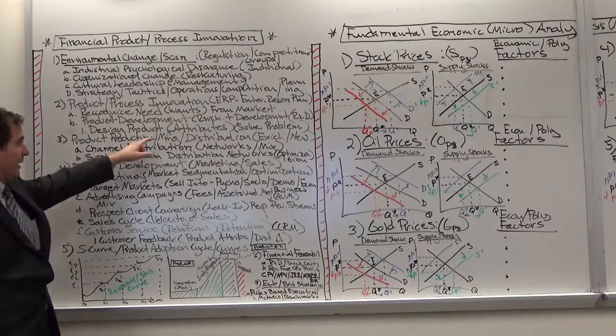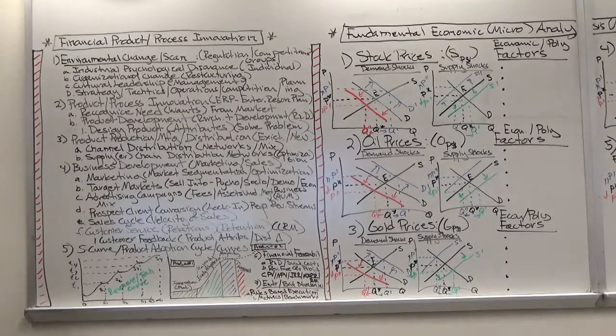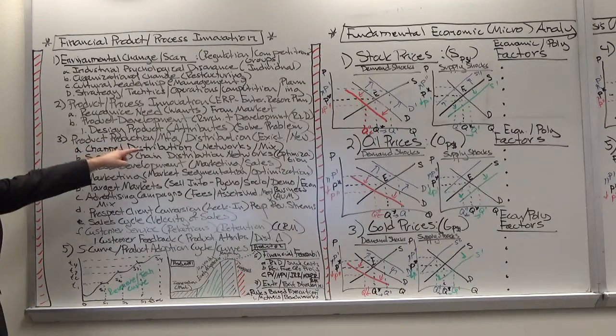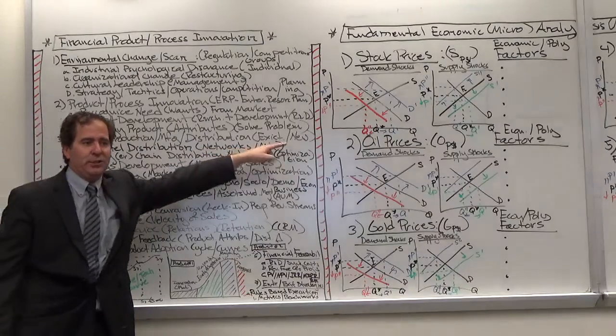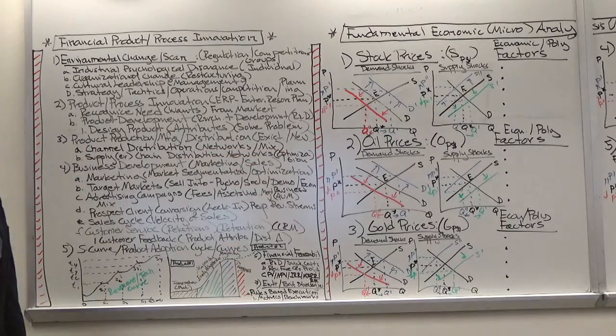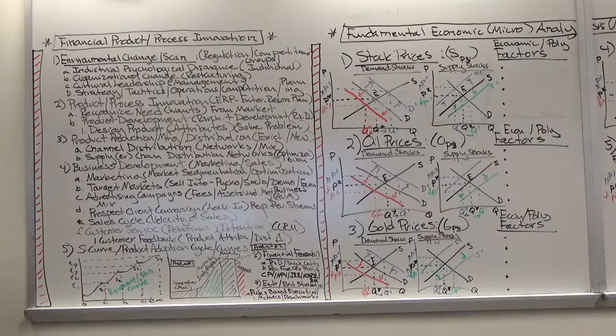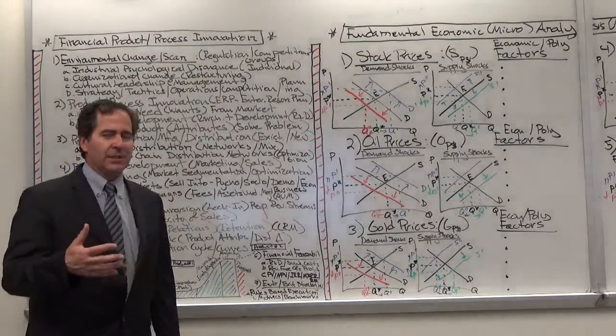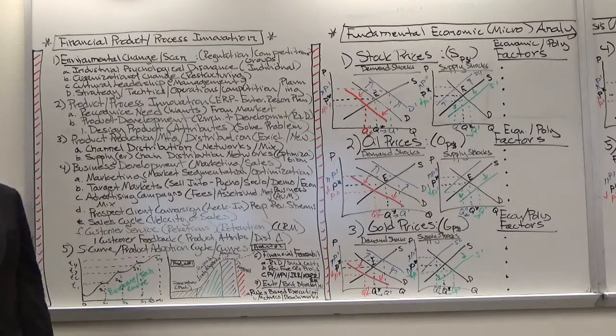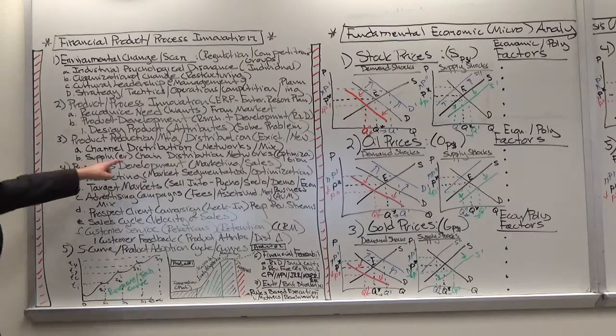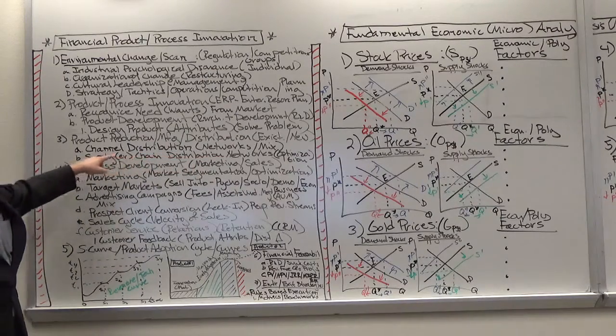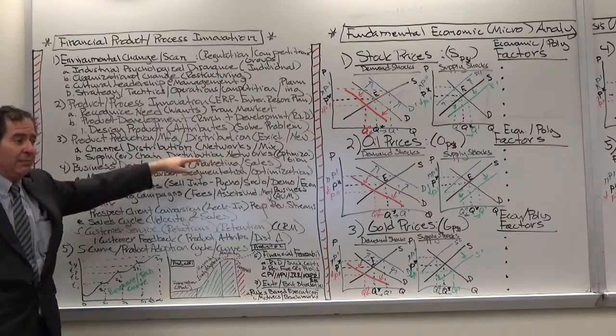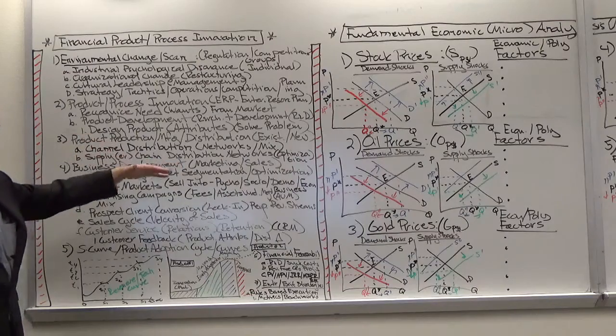So you've got to design the product with the attributes that's going to solve the client's needs. You've got to have the product production. You've got to be able to manufacture it and you've got to be able to distribute it through existing and new distribution channels. What are those distribution channels? What is the optimal mix of the delivery system to push the product out to the customers that need it and then be able to deliver it and close? You need channel distribution and networking and the mix among those channel distributions. They need to be optimized, they need to be tested, and they need to be looked at that's going to maximize the revenue distribution.